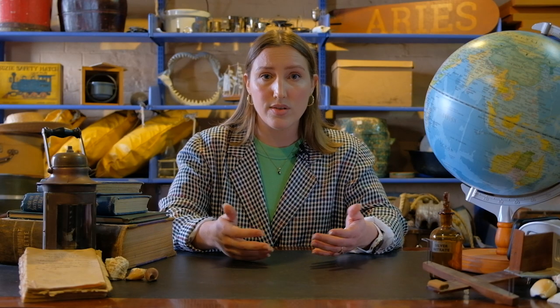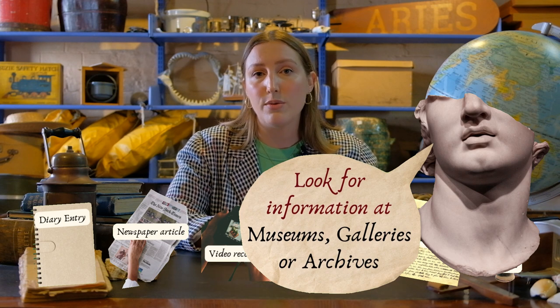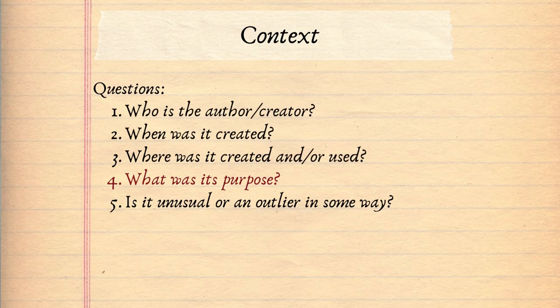If it's a primary source, like an object, museums, galleries, or archives should have this information publicly available. If it's a secondary source, like a written article, the publisher should list this information. The 'what' question will be our next angle. Just because a source existed in the right time or place, or was written by a researcher who often writes about that particular time period, doesn't mean that it's automatically useful to our research. You wouldn't need a 17th century cooking implement in a discussion about music.